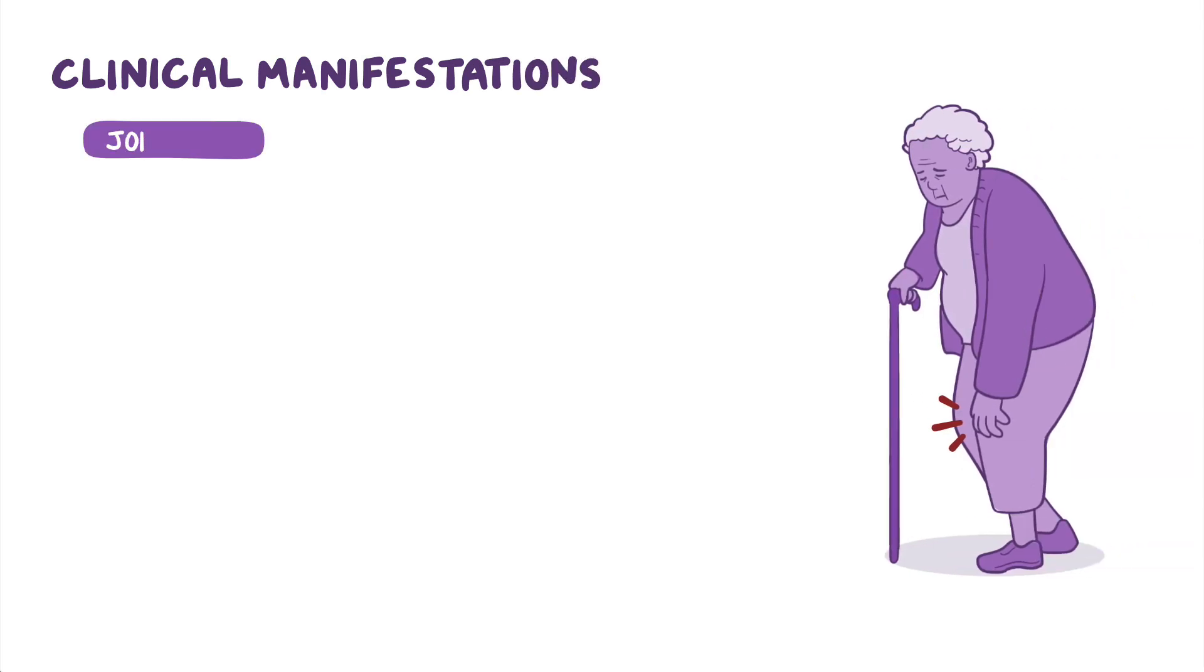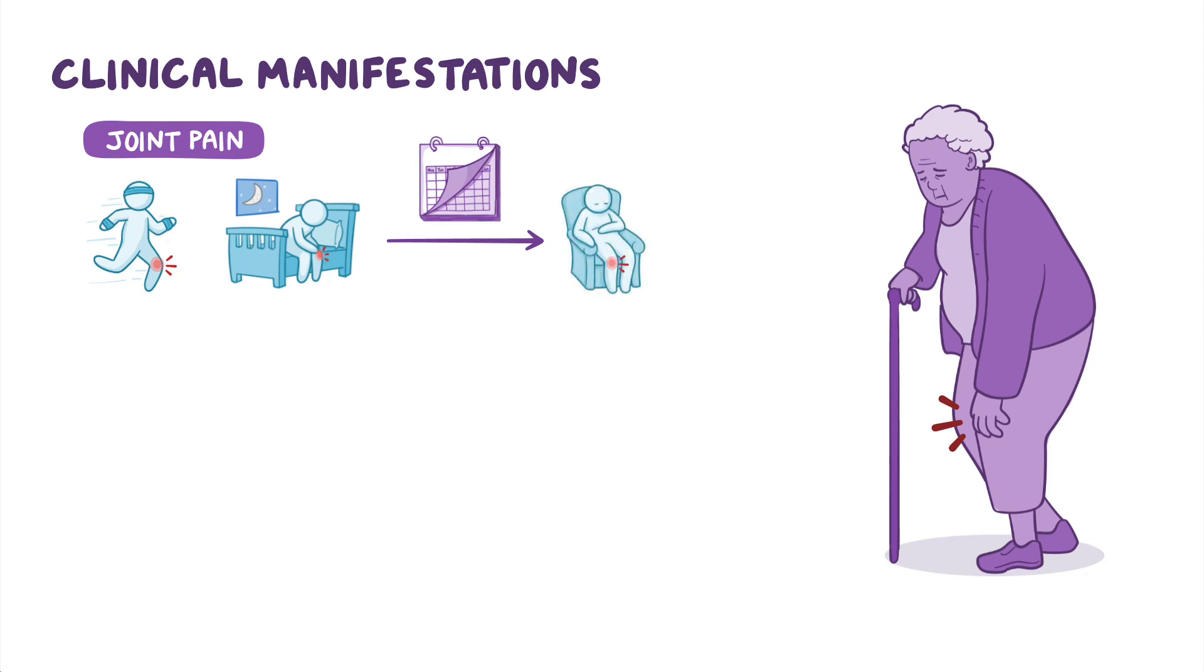The main symptom of osteoarthritis is joint pain. In the early stages of the disease, this pain tends to worsen with activity, and is much more pronounced in the evening. And over time, clients may also experience pain with slight motion or even at rest. Sometimes, joint pain can get worse with weather changes.